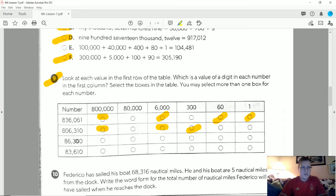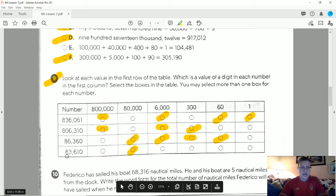My last two options, I'm not going to use this box, I'm actually going to use this one. So I have 80,000, I do have a 6,000 for the first one, I have a 300, and I have a 60, but I do not have a 1.